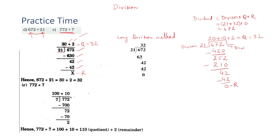By the same method, let's solve 772 divided by 7. I have written 772 inside the box and 7 as the divisor. 7 times 100 equals 700. Subtract 700 from 772 to get 72. Then 7 times 10 equals 70, and subtracting 70 from 72 gives a remainder of 2. The quotient is 110.